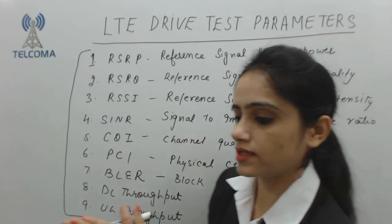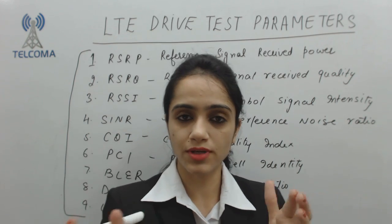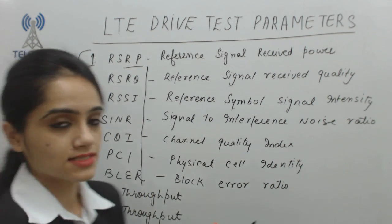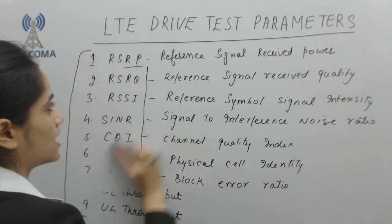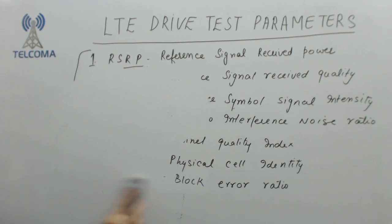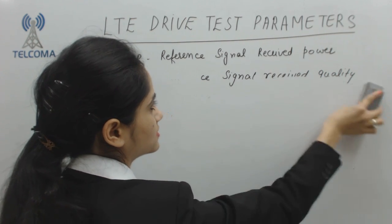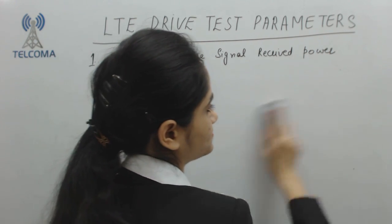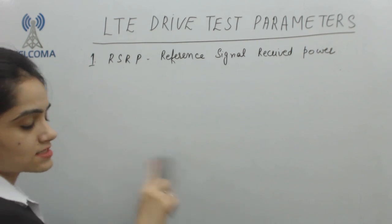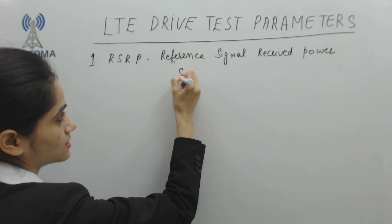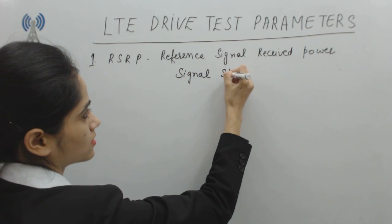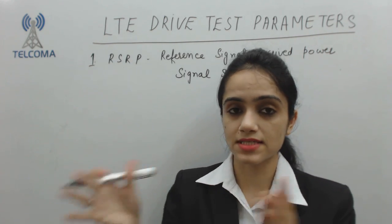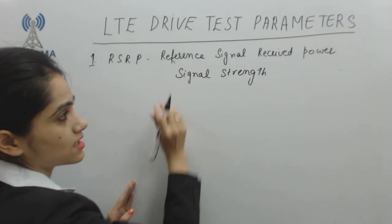Now we will discuss one parameter after another — what they are and what values they should be in between. That means the key performance indicators of various parameters we will discuss. Let's start with the very first, RSRP, which is Reference Signal Received Power. This parameter will show me the signal strength. If we want to have a particular signal strength of a cell, we need to monitor RSRP power.